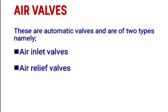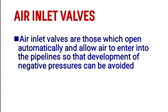Air valves are automatic valves and are of two types: air inlet valves and air relief valves. Air inlet valves are those which open automatically and allow air to enter into the pipelines so that development of negative pressure can be avoided.